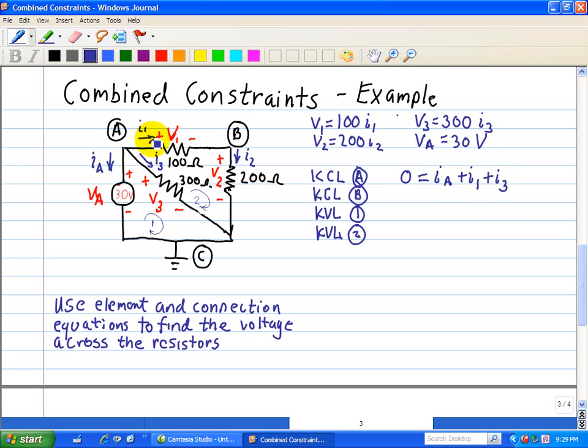At node B, we have I1 as the incoming current, and that's equal to the outgoing current, I2. So I1 is equal to I2, but this just shows that they're connected in series, the 100 ohm resistor and the 200 ohm resistor.